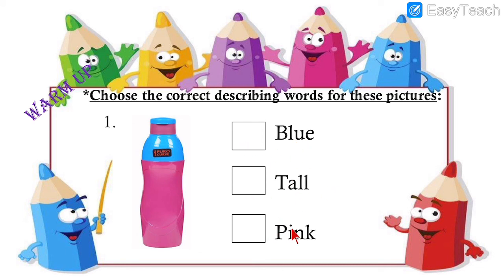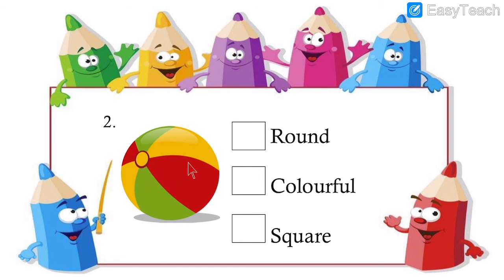This is a plastic bottle in which we drink water. We have to mark the correct adjectives — blue, tall, or pink. It is of blue color and it is of pink color, so these are the two correct adjectives for the bottle. Image number two: a colorful ball with three different colors — red, yellow, green. The ball is colorful and round, not square. Round and colorful are the two adjectives that describe the ball.